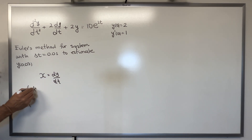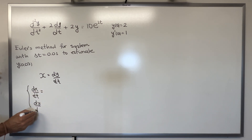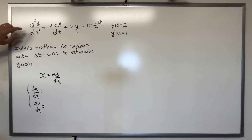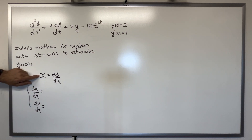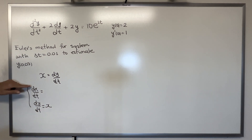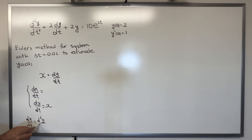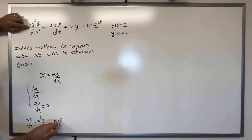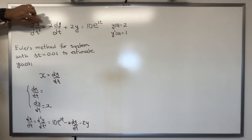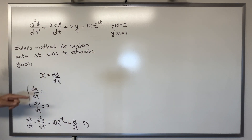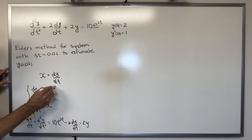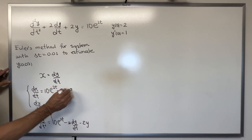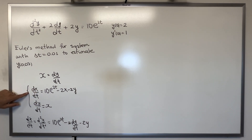The system will be: dx/dt equals something and dy/dt equals something. Once we have the system, we can apply the Euler method. Notice that dy/dt is simply x. For dx/dt, that is the second derivative of y with respect to t, which we can solve from the original equation: dx/dt equals 10e^(2t) minus 2x minus 2y.